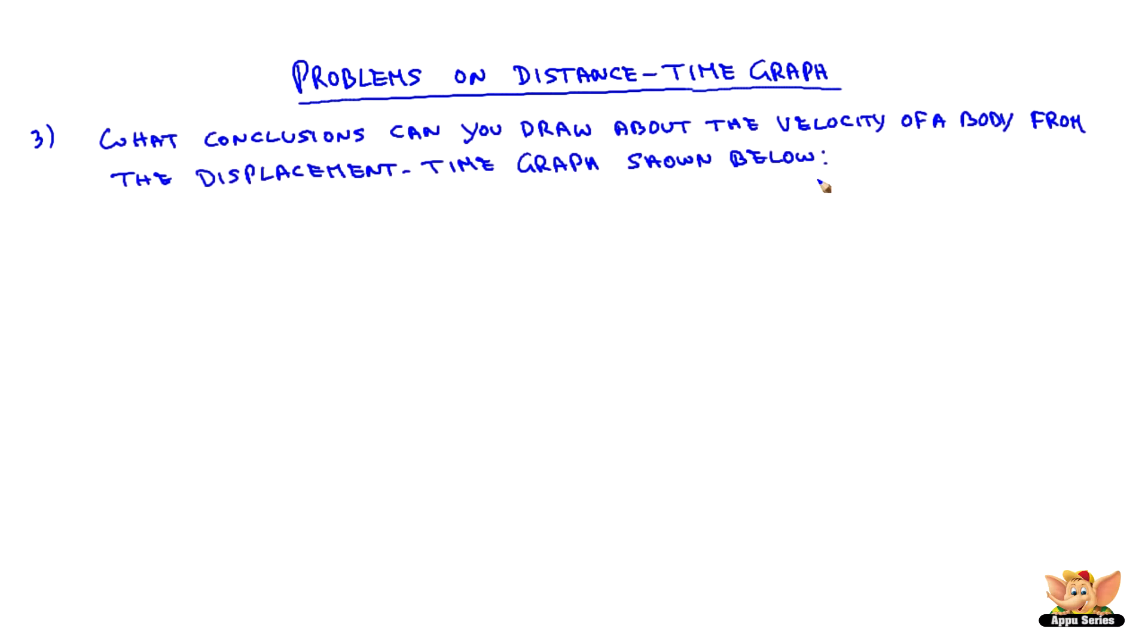What conclusions can you draw about the velocity of a body from the displacement-time graph shown below? So the graph is a straight line, x-axis time, y-axis distance.